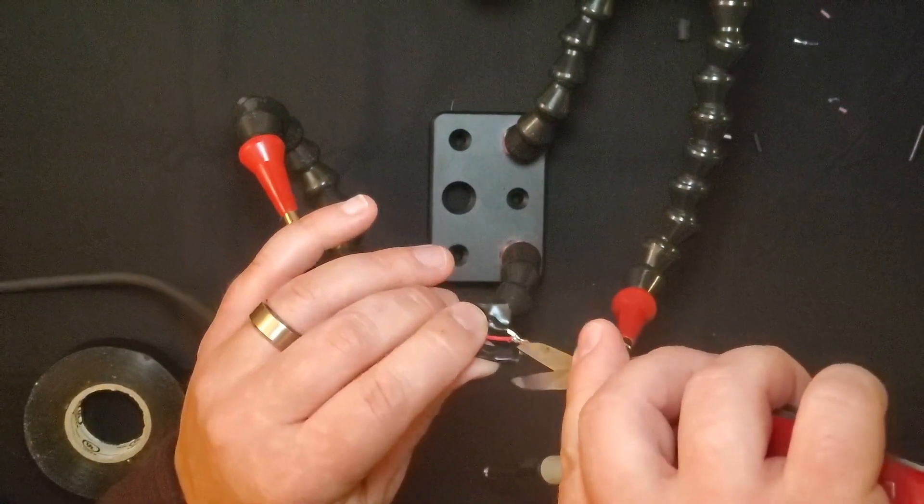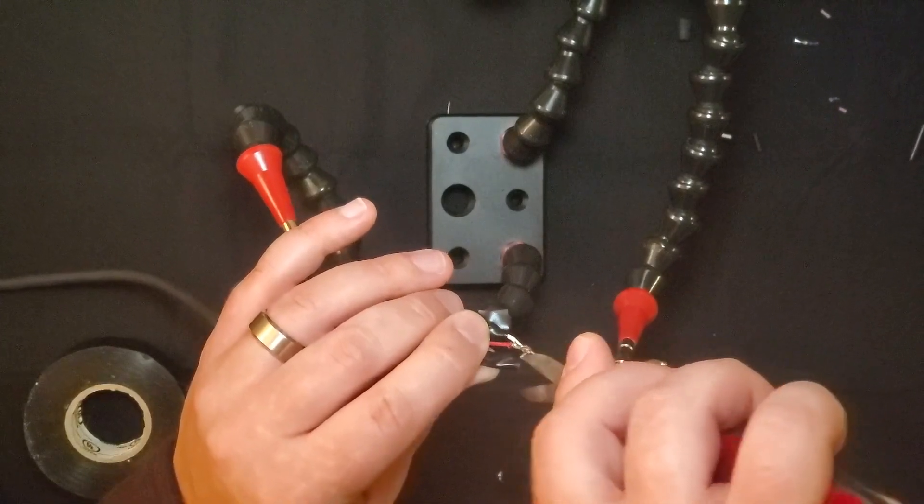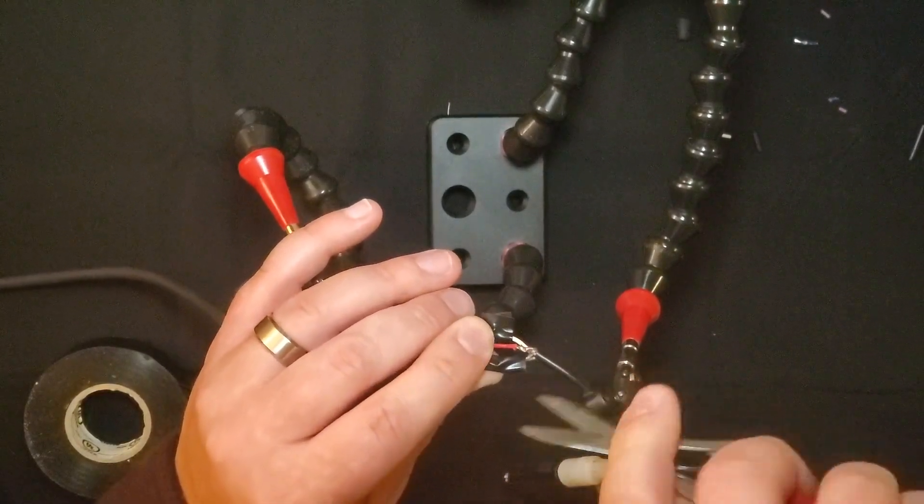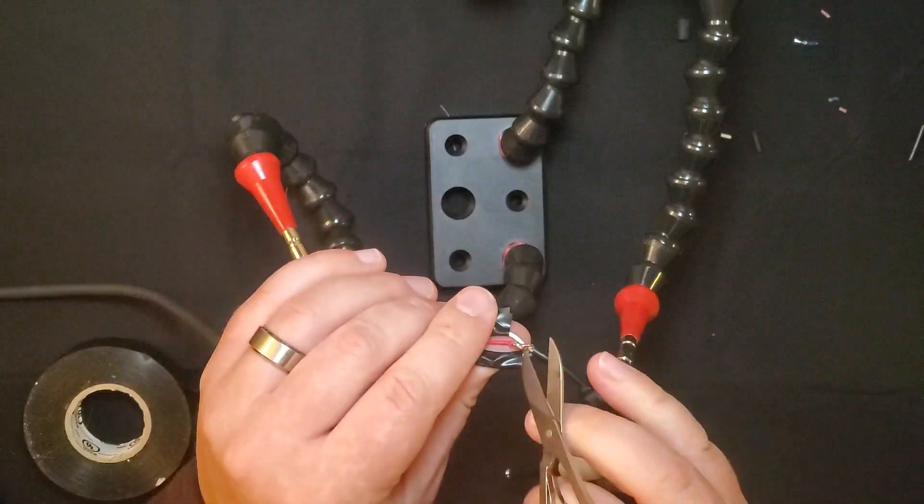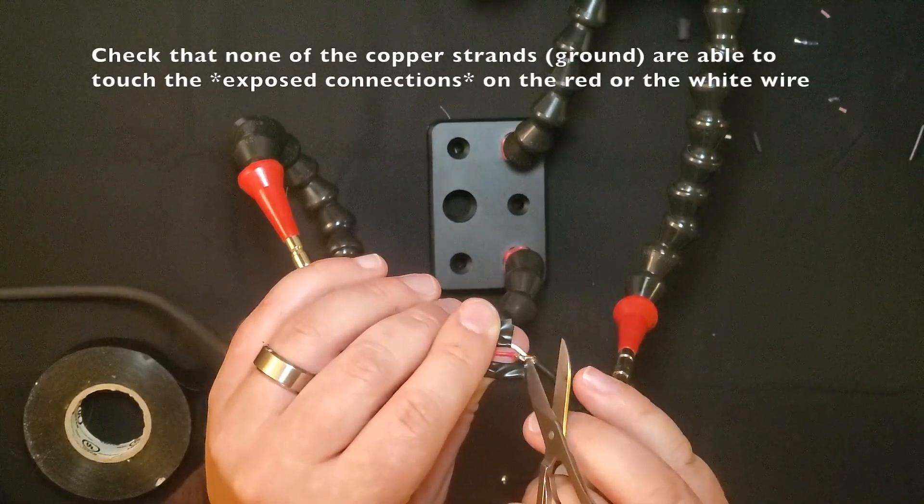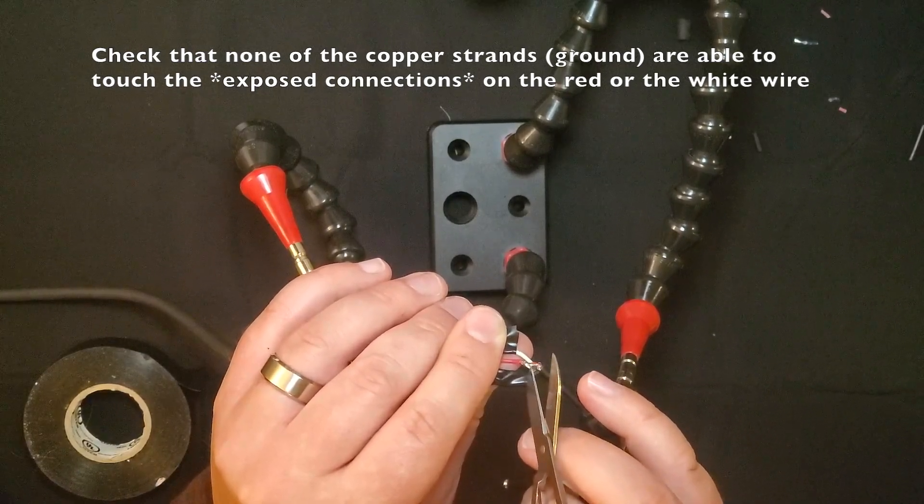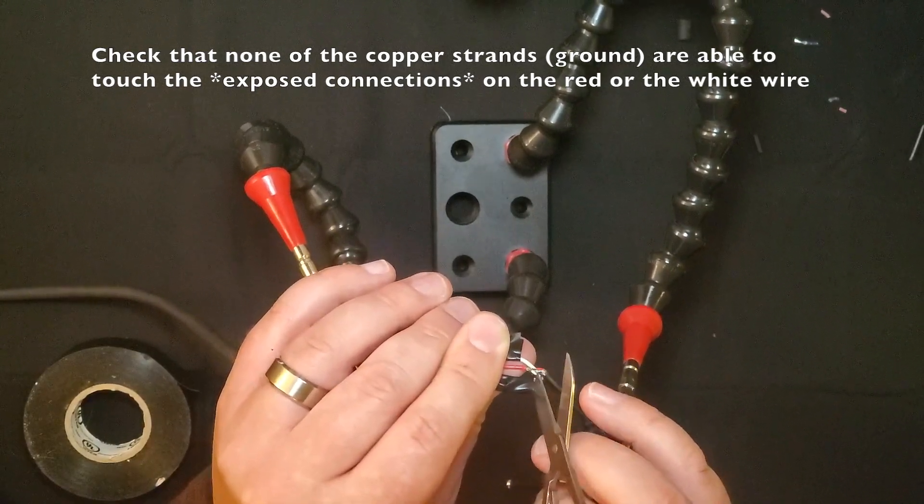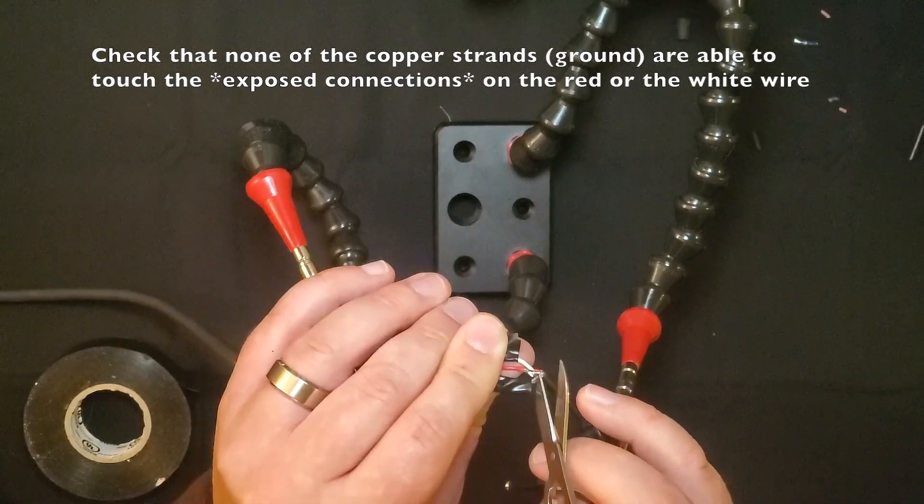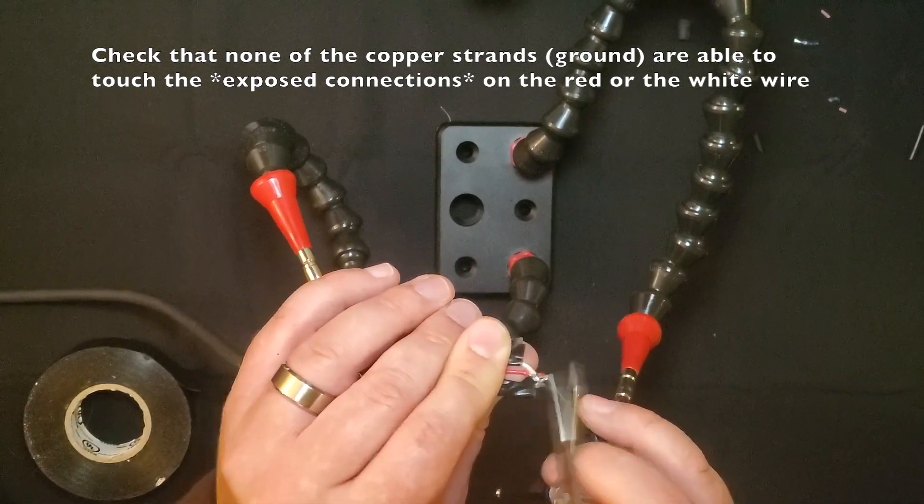And now it's worth checking that none of the individual strands of the ground wire are able to touch the red wire or the white wire. I'm using the sharp side of the scissors here just to push these strands down and onto that lower copper ground, so that none of them are anywhere near the connection on the red.